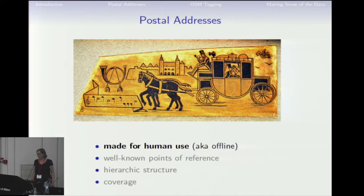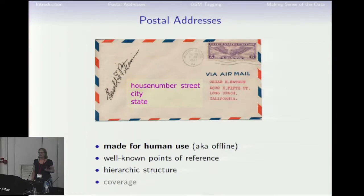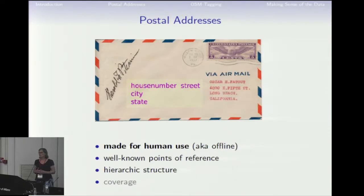There are a couple of things which are important for human-readable addresses. The first is you should use well-known points of reference — people know what city names and street names are, and if you don't know them, there are signs where you can confirm you're at the right location. The second thing is there's always a hierarchic structure. The standard address goes something like: country, city, street, and house number. This is good because depending on how well people know the location, they can always kind of locate the object. For example, I don't know Long Beach, but if this address is presented to me, I know where California is, which already tells me it's not an address in Germany.